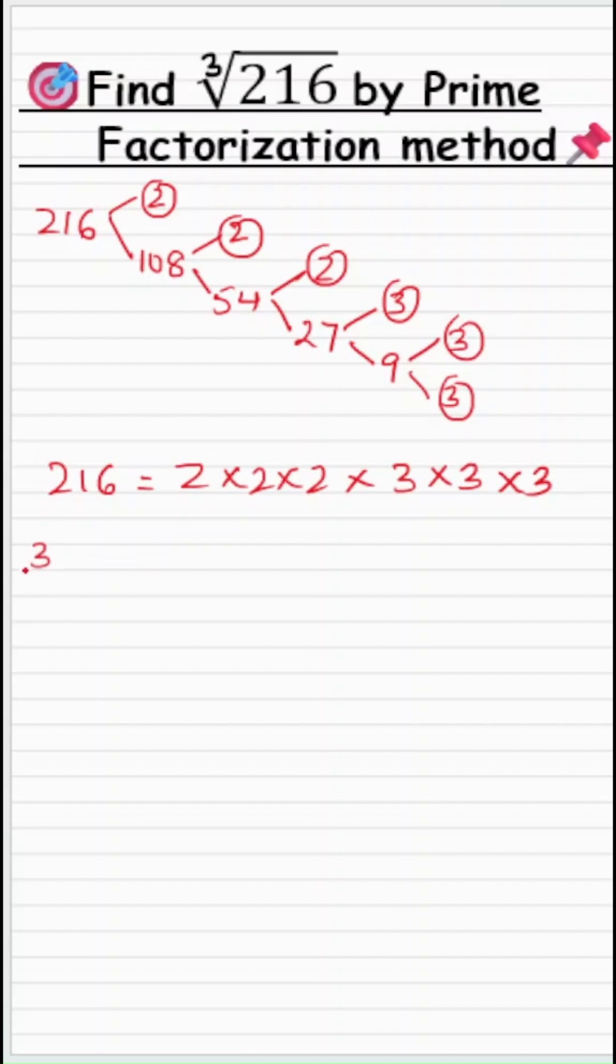So cube root of 216 is equal to cube root of this right side, which is 2 times 2 times 2 and 3 times 3 times 3. To find the cube root, I will now form the triples of the same number.